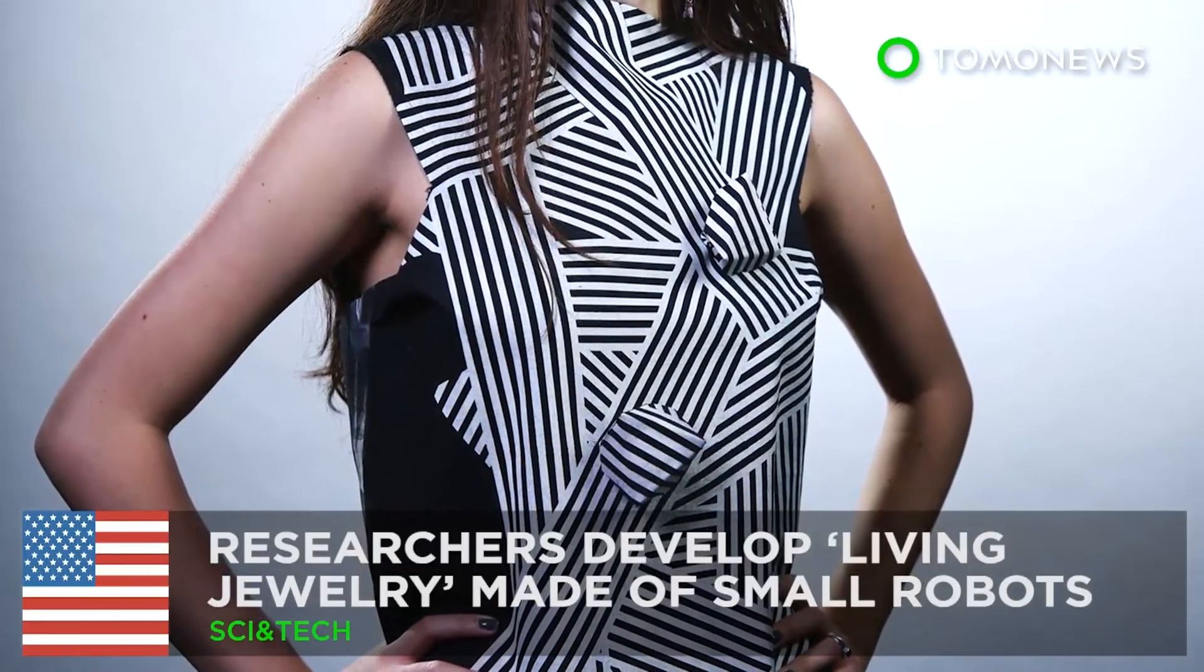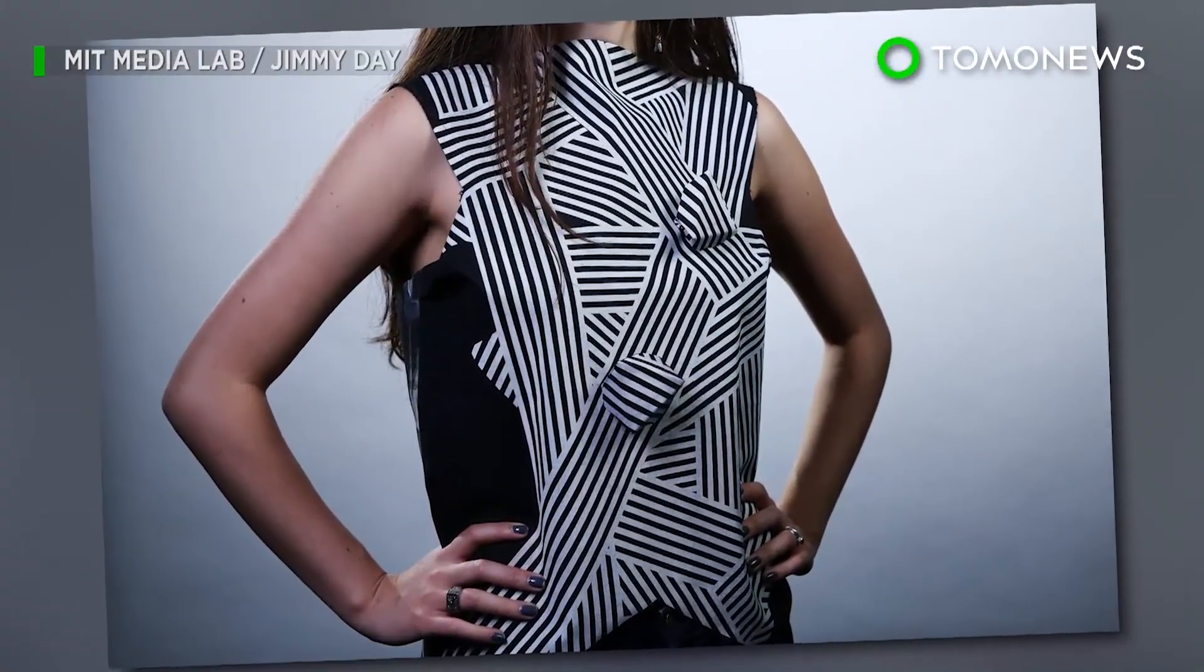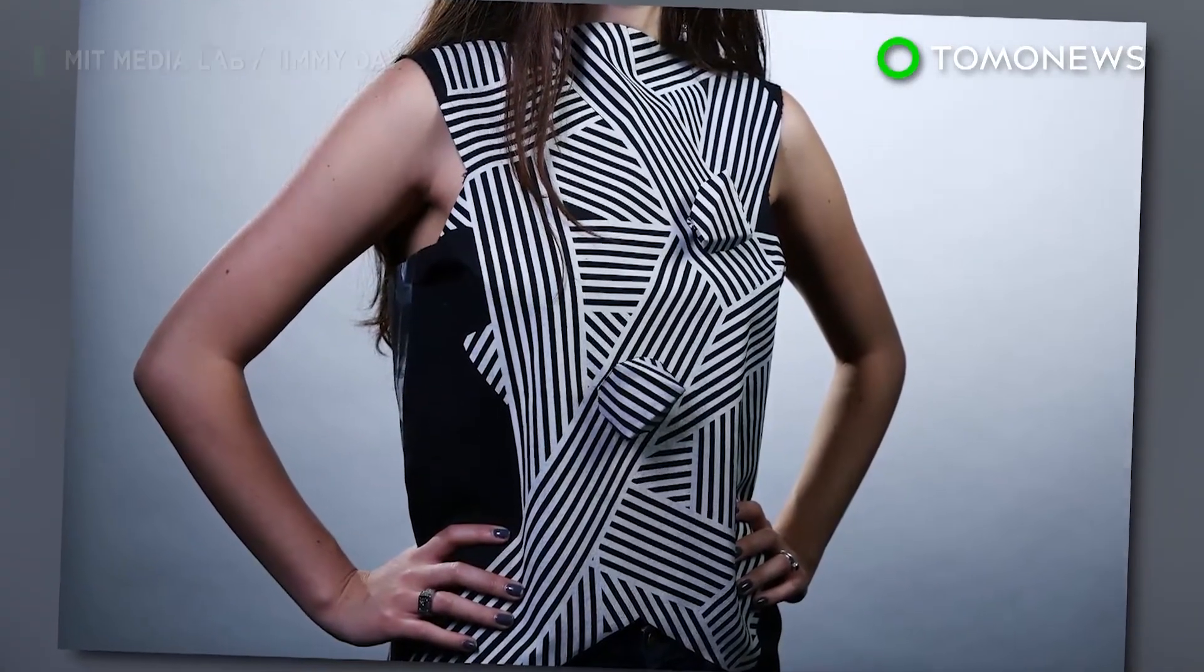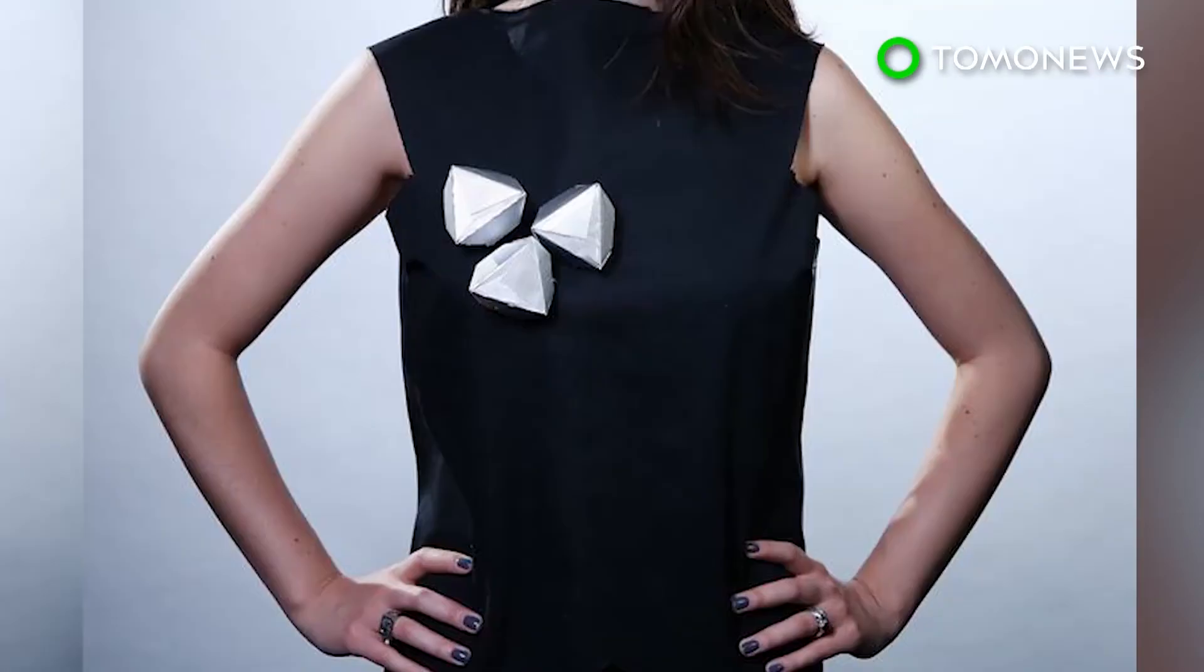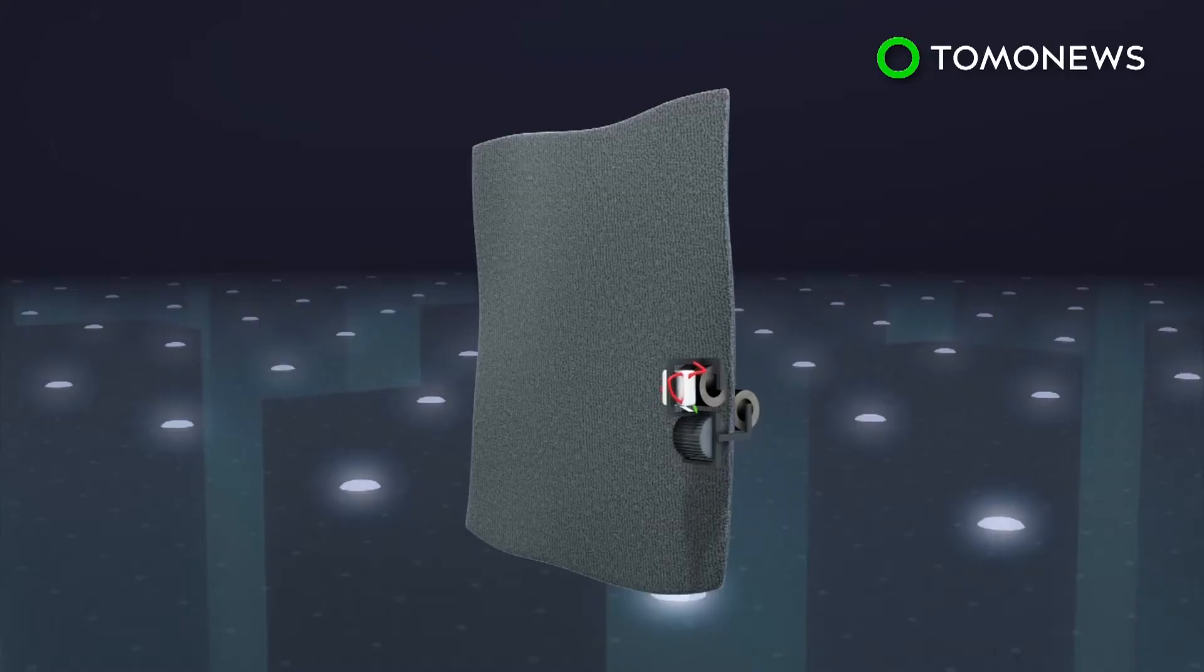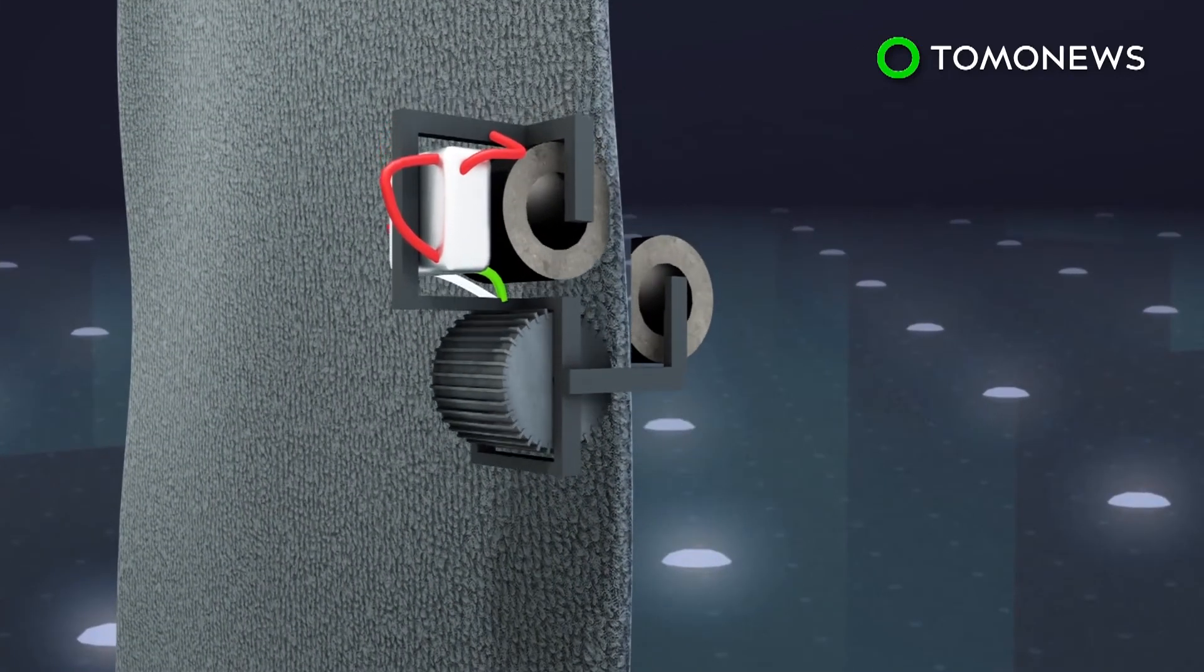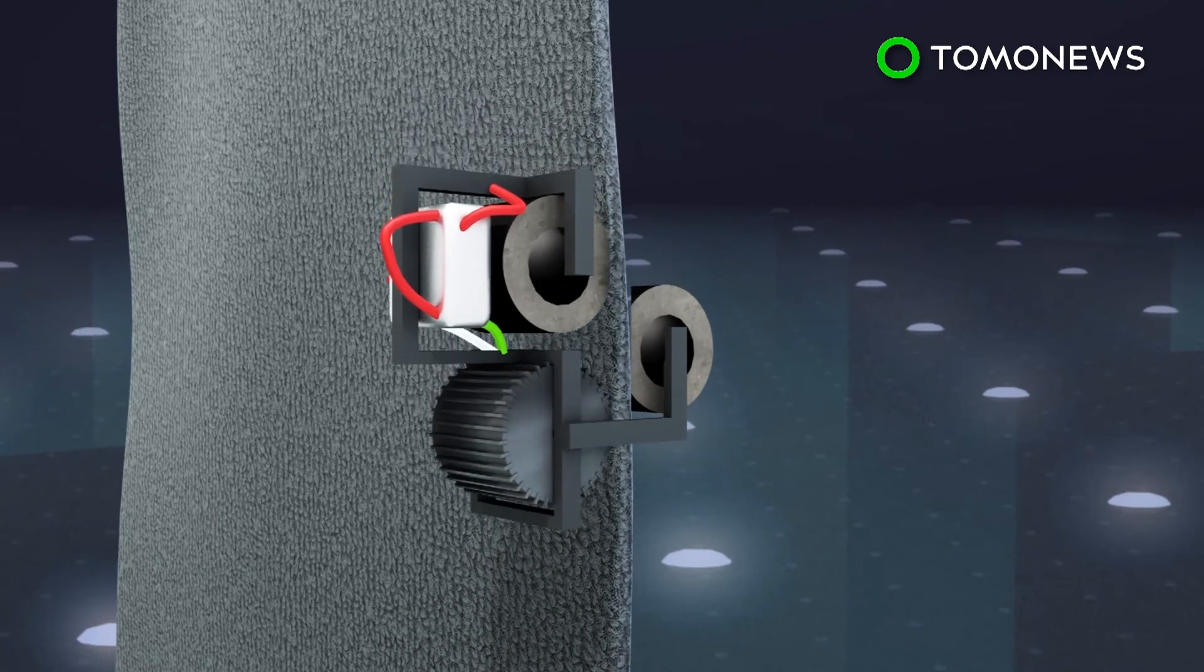The jewelry of the future is alive. Researchers from MIT Media Lab have taken wearable tech to another level by developing jewelry designed with small robots that can roam freely around your body. The robot consists of motors connected to magnetic wheels on top and underneath the fabric, which allow it to change orientation.